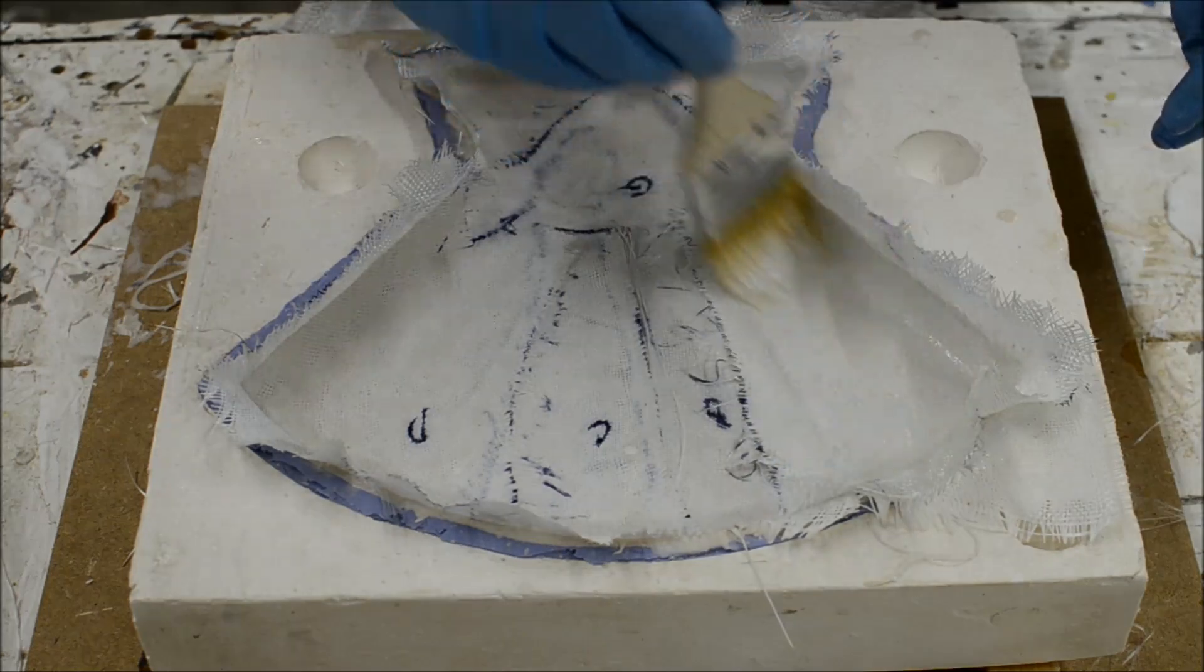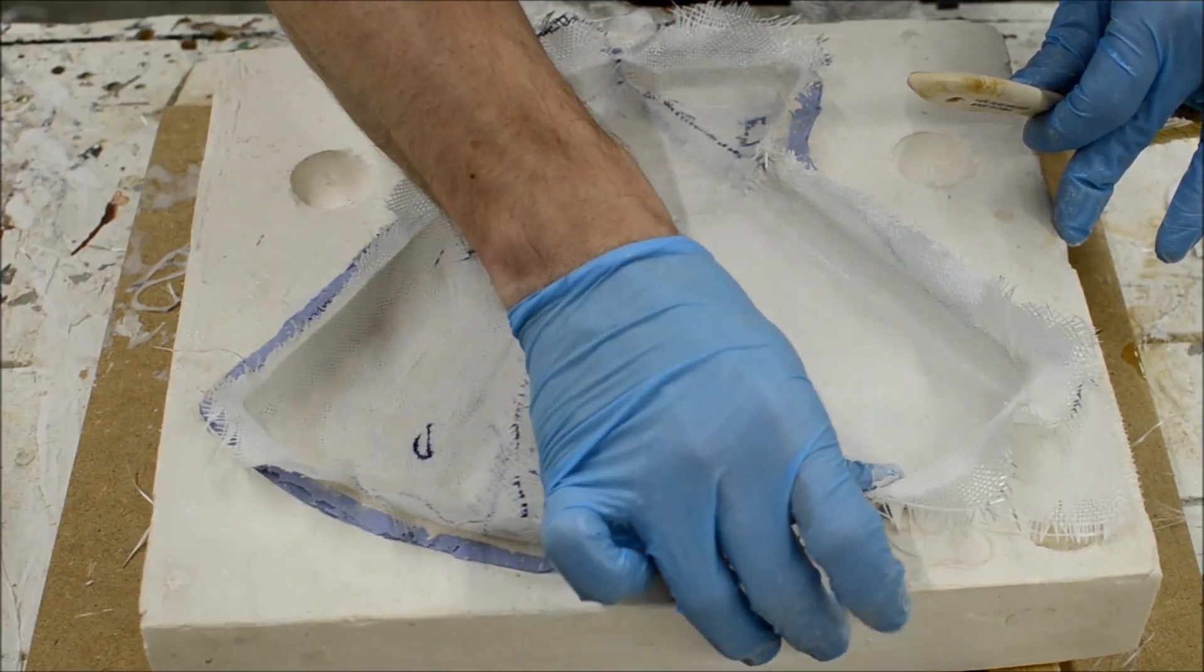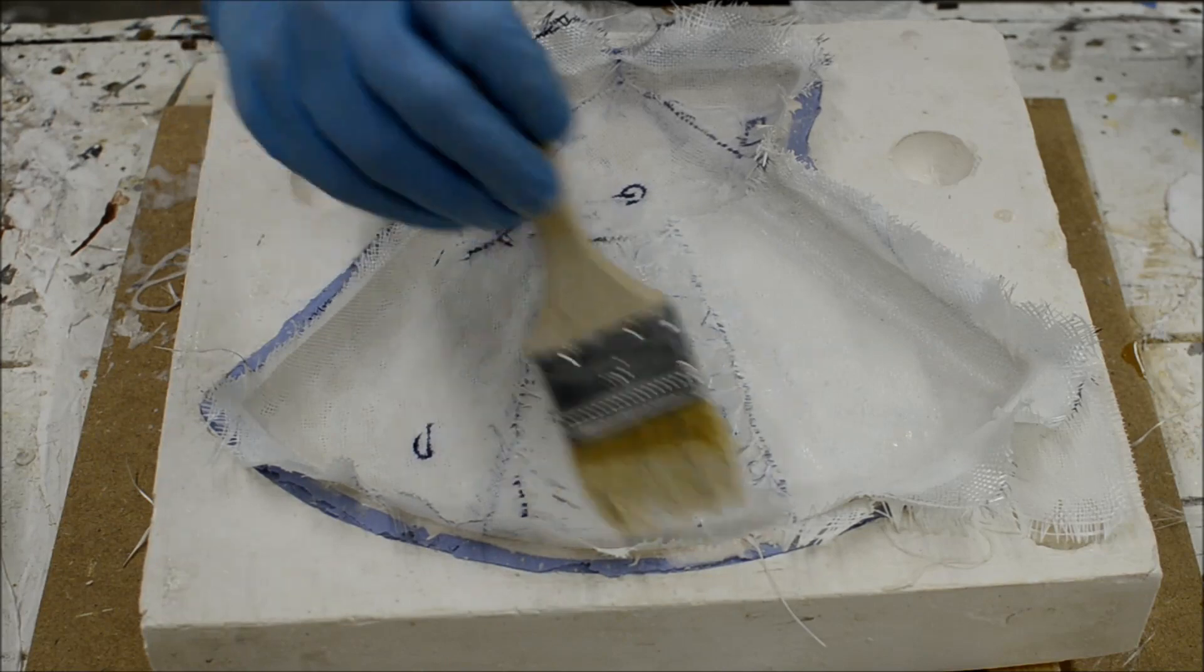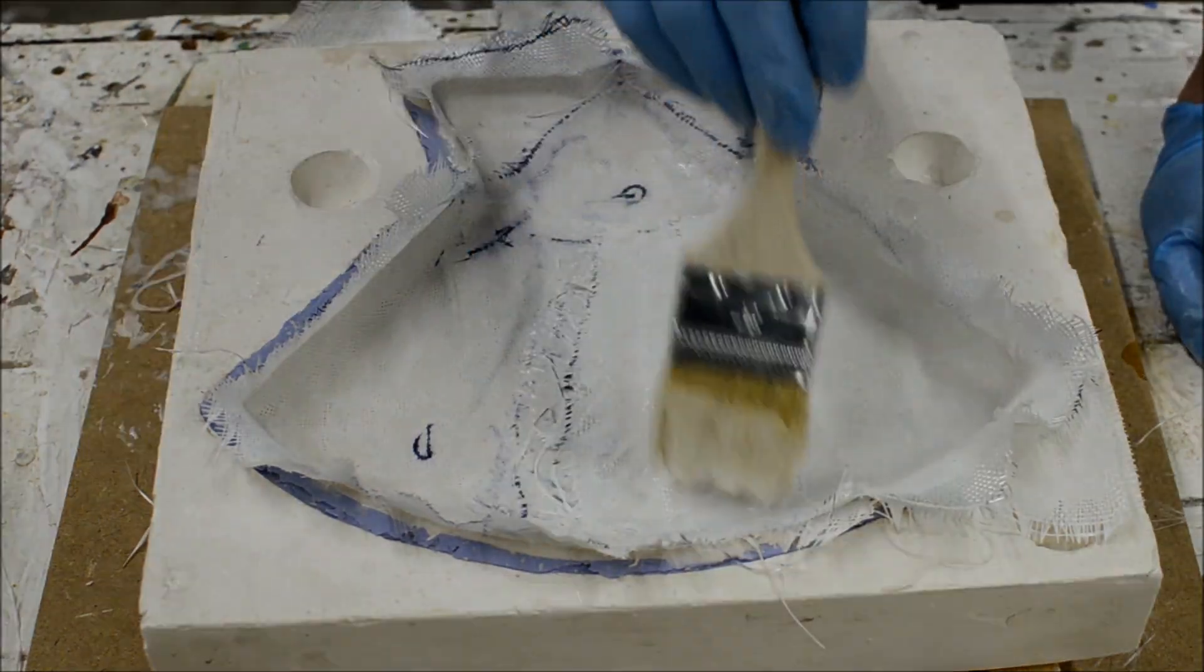Do not pick up or slide the fiberglass cloth once it has been placed down in the resin. Again, work air bubbles out by pressing or rolling. All the pieces need to be pressed fully against the layer before it.